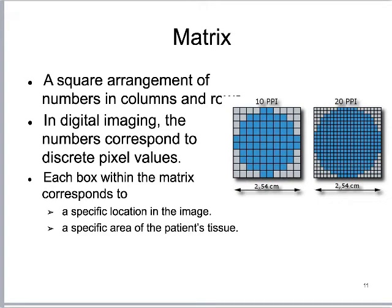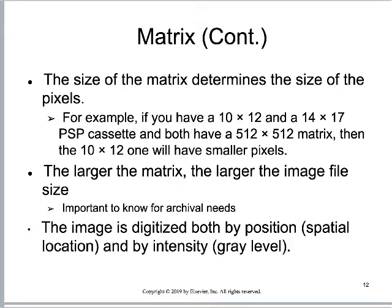The matrix is all of these little squares arranged in columns and rows. In a digital image, the numbers correspond to discrete pixel values, spatially representing digital information. Each box within the matrix corresponds both to a specific location in the image and a specific area of the patient's tissue. As the size of the matrix increases, the pixels get smaller — so the larger the matrix, the larger the image size, the better the spatial resolution, but the smaller the pixels. The image is digitized both by position (spatial location) and intensity (the gray value registered for any given pixel).